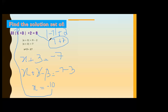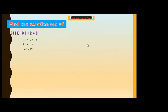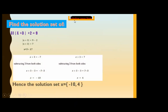Ramla solves the right side: x + 3 equals plus 7. By subtracting 3 from both sides, x + 3 minus 3 equals 7 minus 3, giving x equals plus 4. So the final answer is solution set x equals {minus 10, plus 4}.